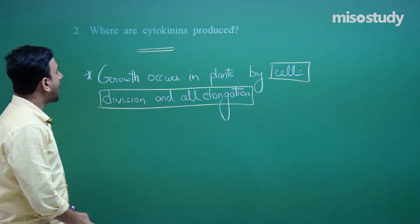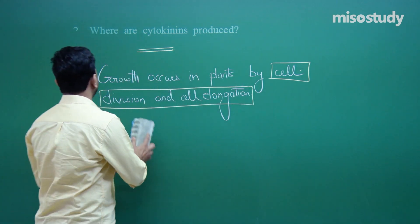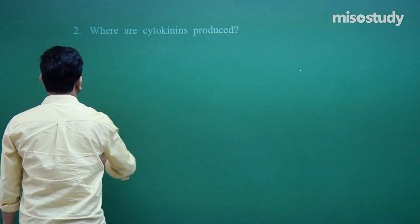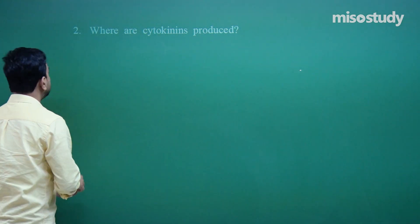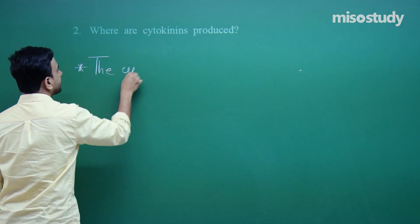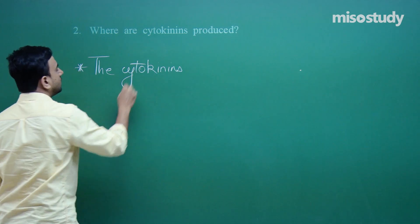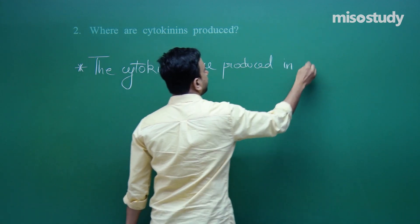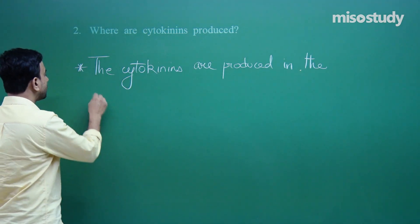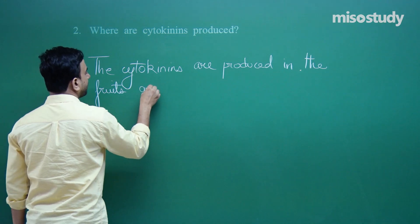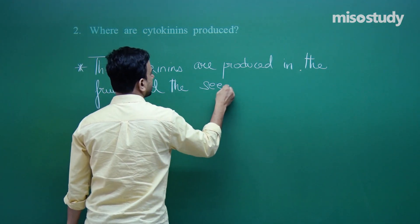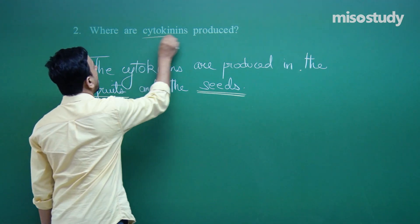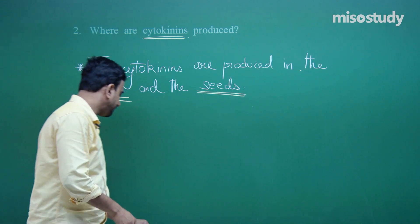We move on to the next question: where are the cytokinins produced? The cytokinins are produced in the fruits and the seeds. This is where the cytokinins are produced.